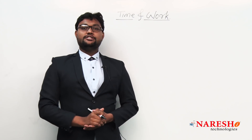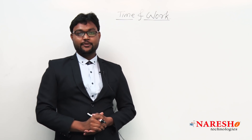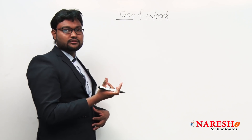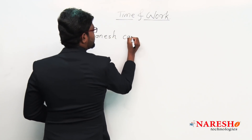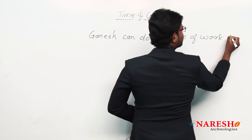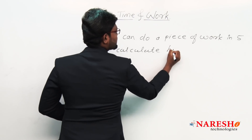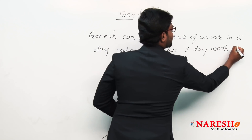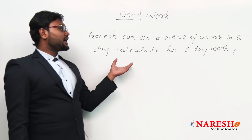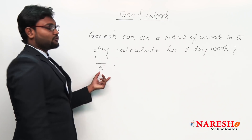Let's take an example for explaining the concept of time and work. Suppose Ganesh can do a piece of work in five days. Calculate his one-day work. After reading this, you might have known the answer — the answer is one by five.